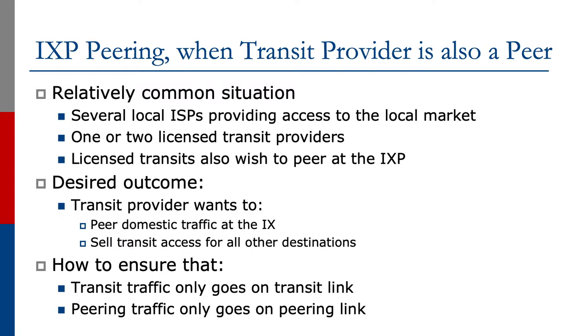We're now going to look at the situation where our transit provider is also a peer at the Internet Exchange Point. This is a relatively common situation. Several local ISPs will provide access to the local market, and there may be one or two licensed transit providers, and these licensed transits also wish to peer at the Exchange Point — either for business purposes, or because local regulations require all ISPs to peer there. The desired outcome is for the transit provider to peer the domestic traffic at the Exchange Point, but sell transit access for all other destinations.